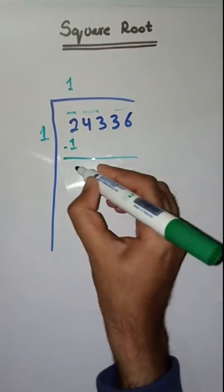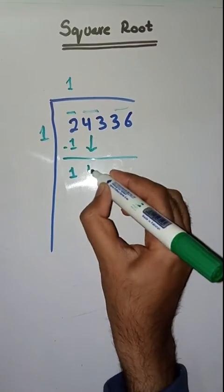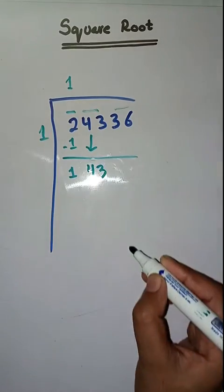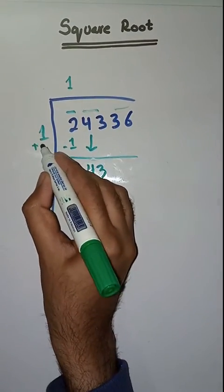Minus that, we'll get one. Next pair is 43. We'll bring it down. Here we'll do 1 plus 1, 2.